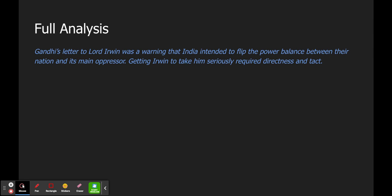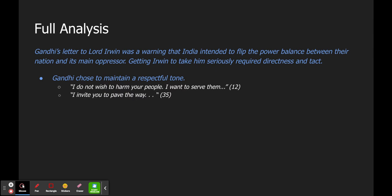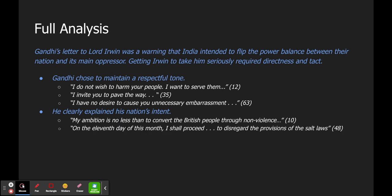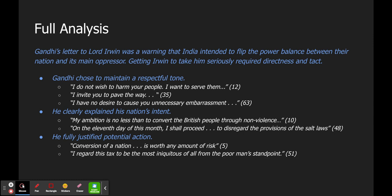So now let's outline this entire analysis and watch how the line of reasoning falls into place. Gandhi's letter was a warning that India intended to flip the power balance with its main oppressor. Getting Irwin to take him seriously required directness and tact. He chose to maintain a respectful tone. I can now provide examples from the text of lines in which I see this respectful tone. There's the third one. He clearly explained his nation's intent. Here are a couple of places where I see him doing that.